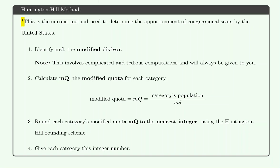With the Huntington Hill method, it's similar to the Jefferson method in that the first step is to identify the modified divisor. Finding the modified divisor is a very tedious and time-consuming process, so we will always be given the modified divisor — you just need to identify where it's given in the problem.